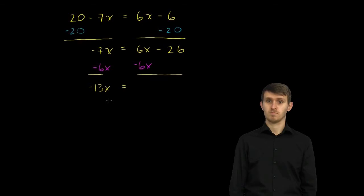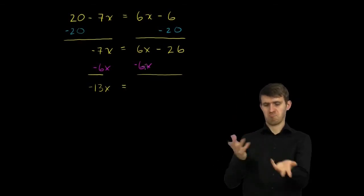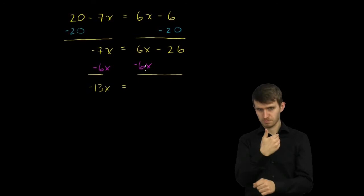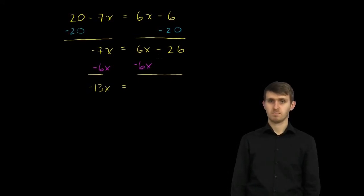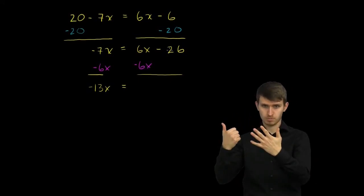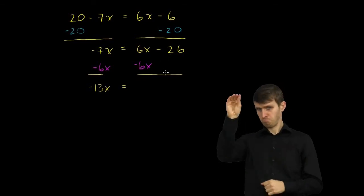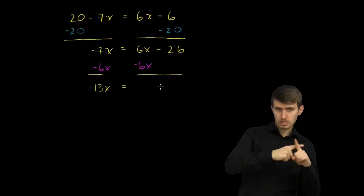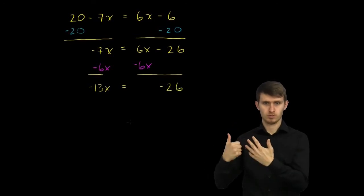And that is going to be equal to 6x minus 6x. That cancels out. That was the whole point behind subtracting 6x. And then we have just a negative 26 or minus 26. So negative 13x is equal to negative 26.